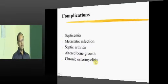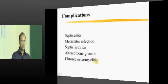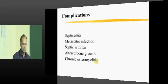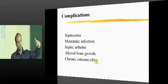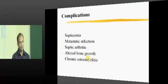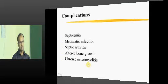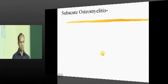Once healing begins, increased blood supply returns to the area. If blood supply is lost to the physis nearby the metaphysis, the physis stops growing and you end up with a short bone. Conversely, if a lot of blood supply comes as part of the healing process, the physis overgrows and you end up with a long bone. If the process continues without stoppage, it ends up in chronic osteomyelitis.